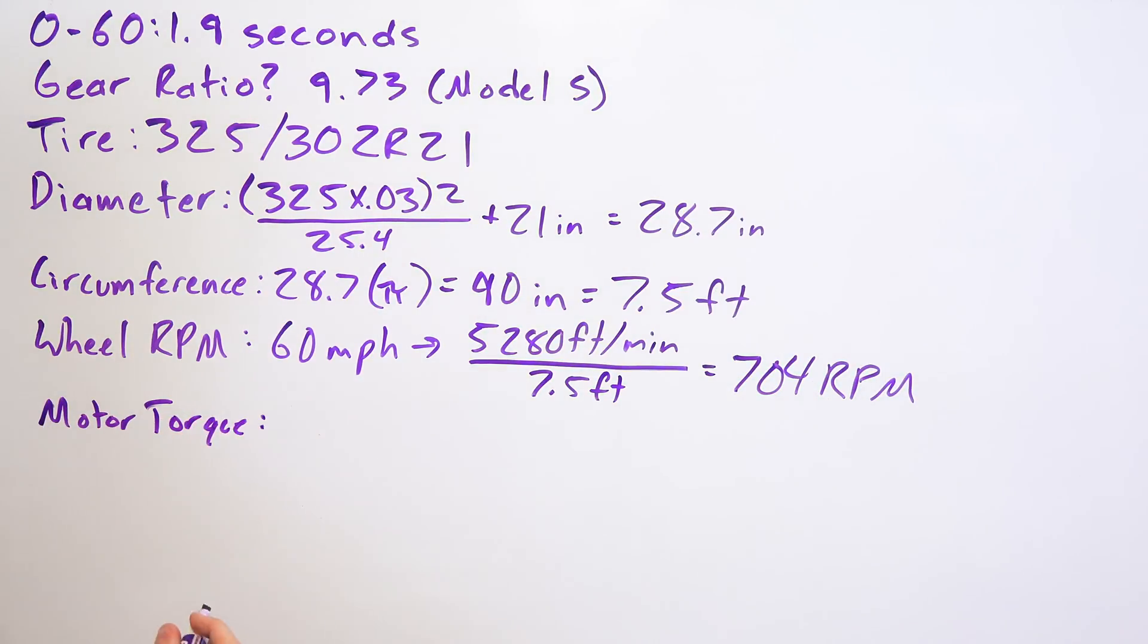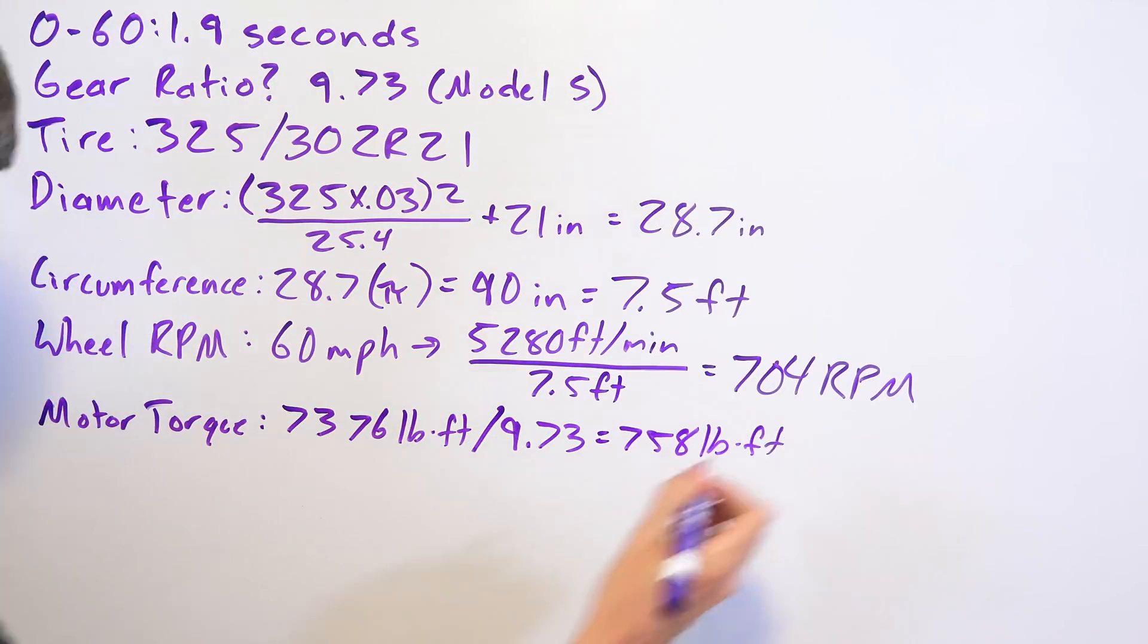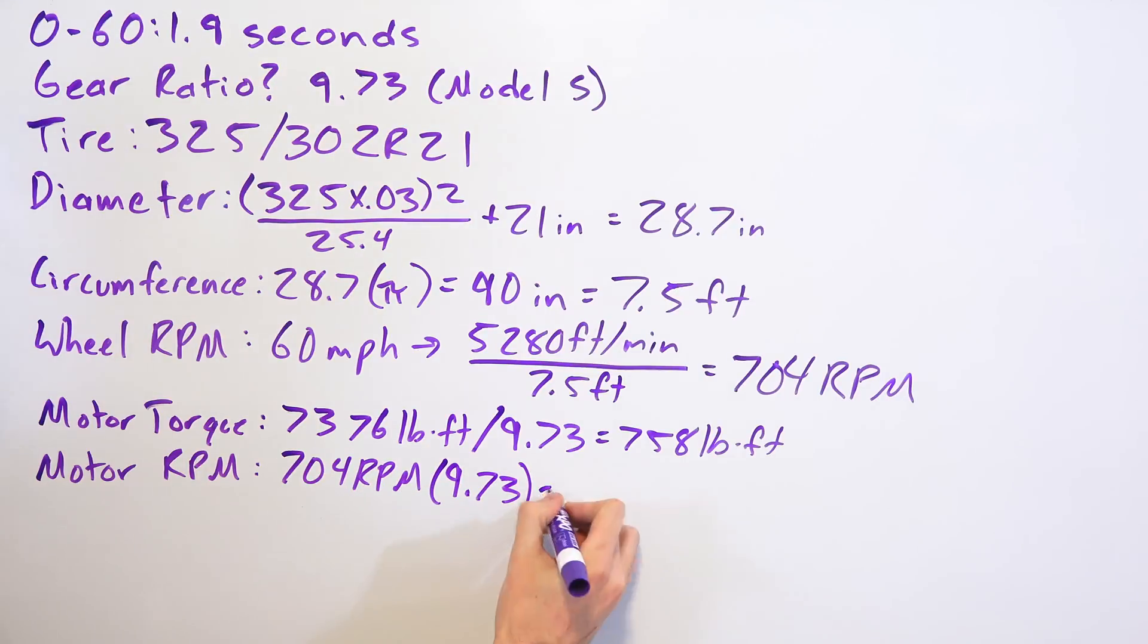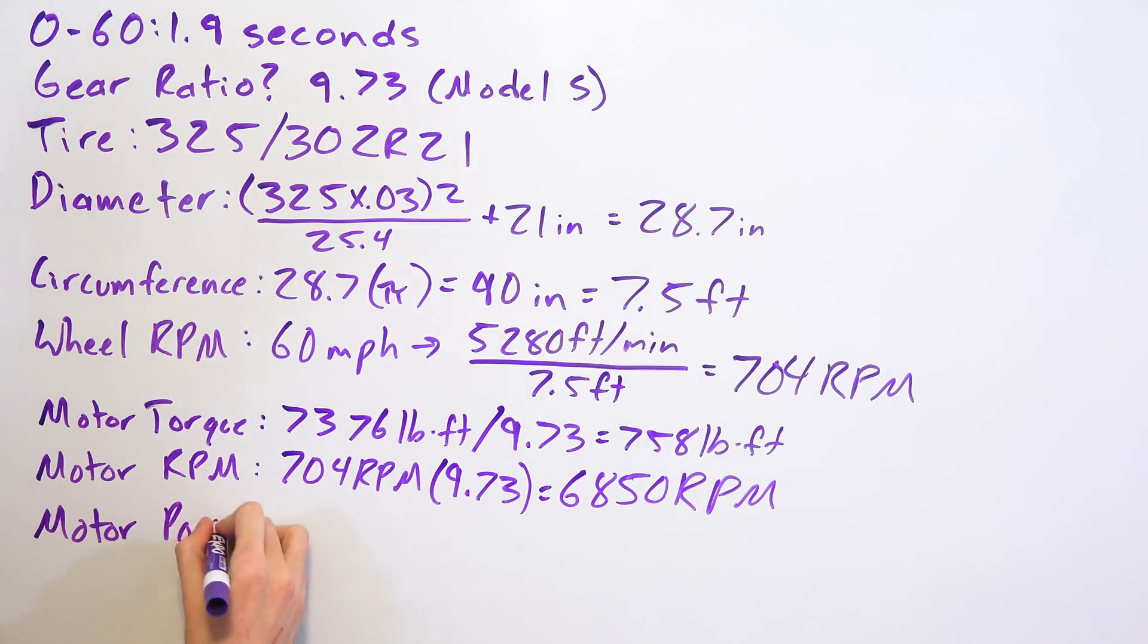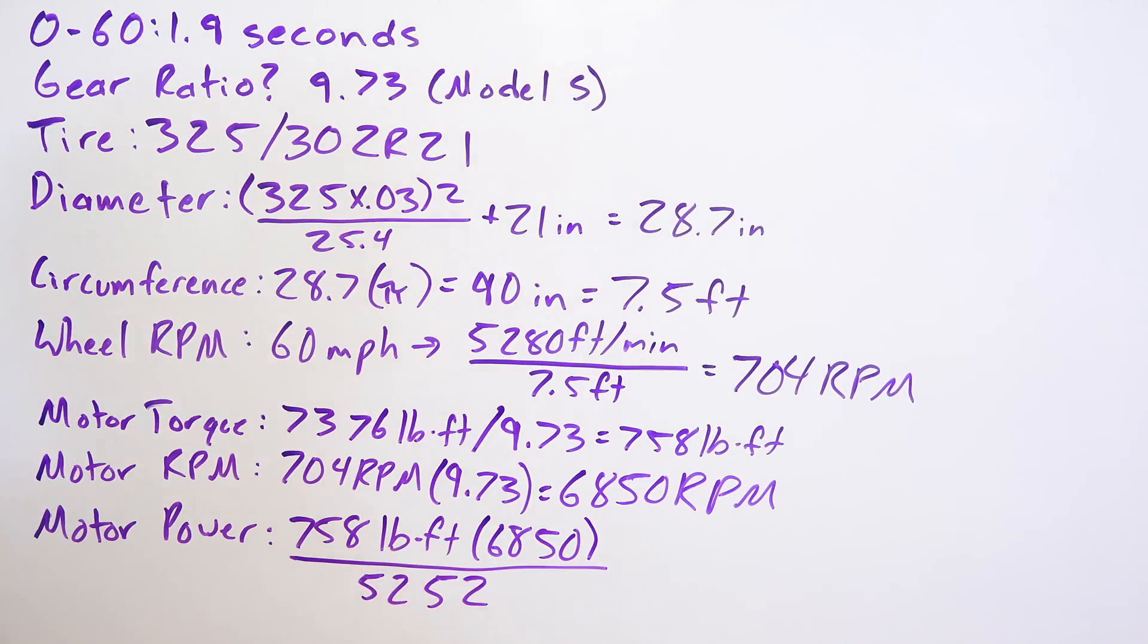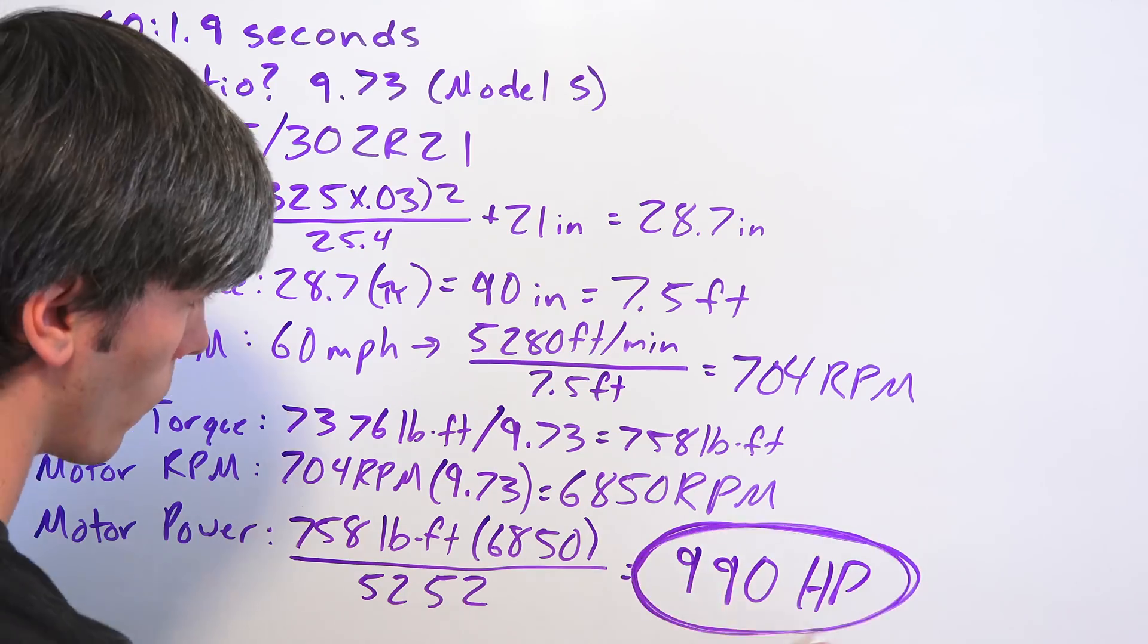then we can do a little bit of math to calculate motor torque, to calculate the motor rpm. And if we assume that the peak torque can last all the way to 60 miles per hour, then we can calculate what that motor power might be, and in this case it's going to be about a thousand horsepower.